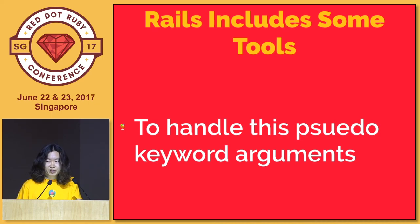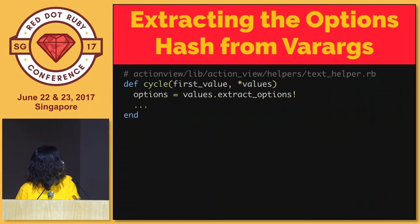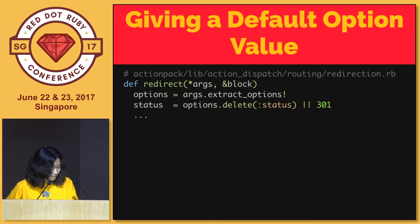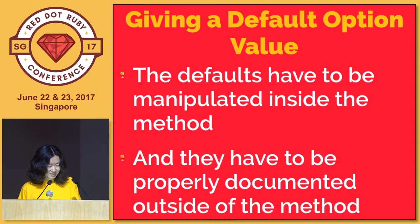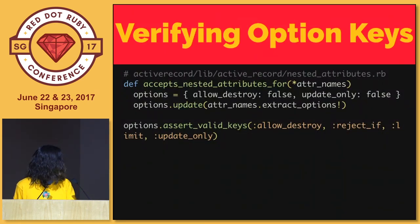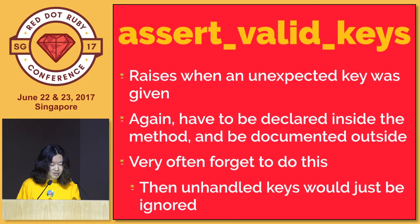This is included in Rails toolchain in ActiveSupport. This is how Rails extracts options from given var args - there's a method on array called extract_options!. Since it's just a hash, you can define a default value inside the method like this. And never forget to write documentation about the default values outside the method. You can also verify option keys to make sure you haven't got any unexpected keys, raising when unexpected keys are given. You have to write both the code and the documentation.